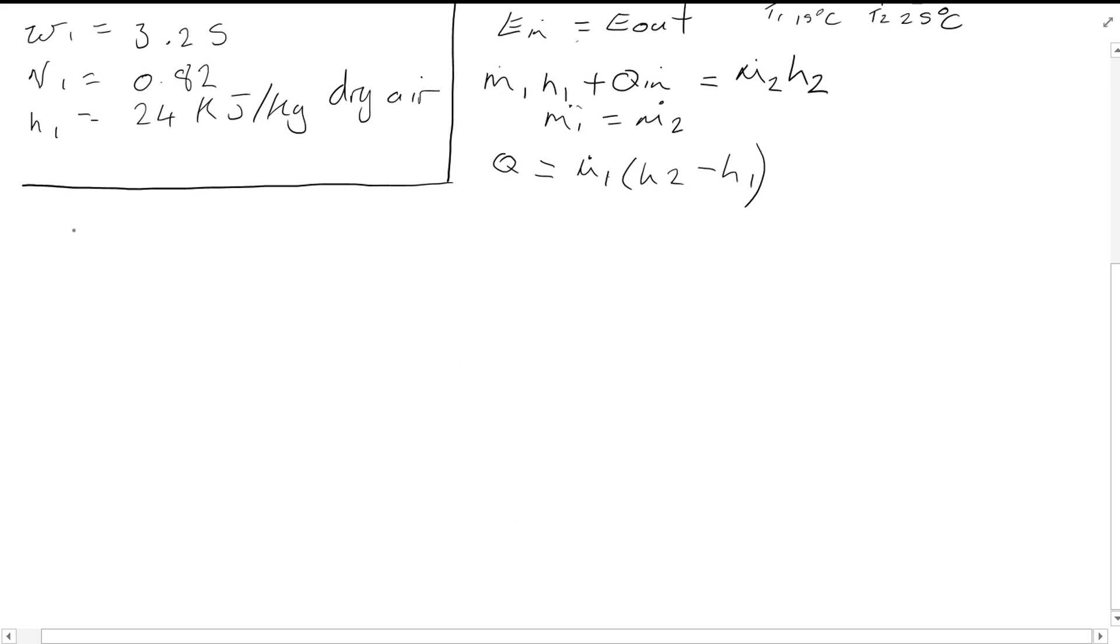Similarly, at point 2, because we know W1 is equal to W2 equal to 3.25, and because we know the temperature at 2 is given at 25 degrees, we also have two values. So we can also find the enthalpy H2, which is equal to 54 kJ per kg dry air.